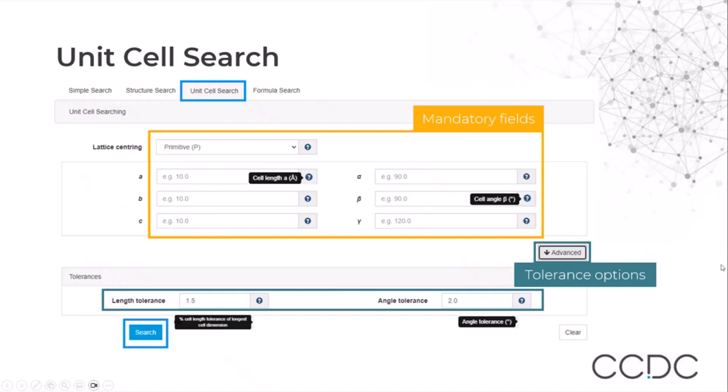Next, we have the unit cell search. Here you have some mandatory fields that you need to input, including the cell length, the cell angles, and also the lattice type. There are advanced options which help you define the tolerance on both the length and the angle.